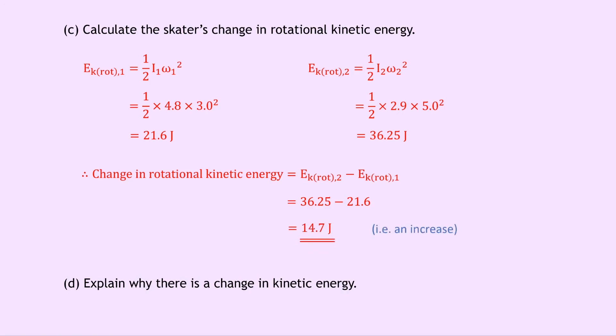Part D asks to explain why there is a change in kinetic energy. The change in rotational kinetic energy is supplied by the skater's body — the chemical energy they get from food. That's all for this video guys, I hope you found it useful. If you did, give it a thumbs up, subscribe, and I'll see you in the next one. Take care.